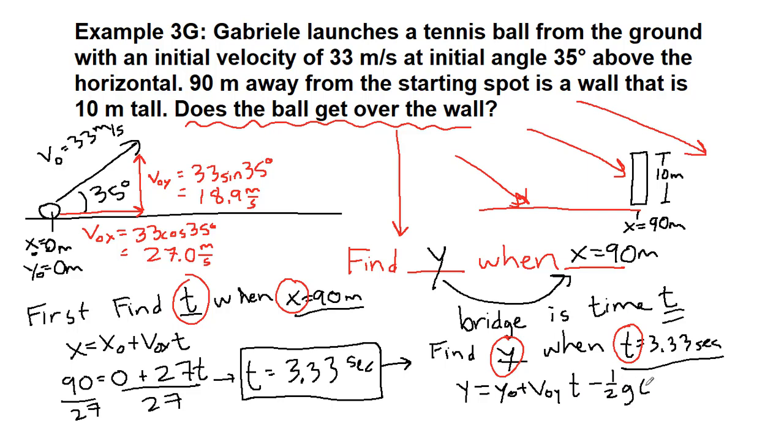And now we see that once we've found t, we have everything in this equation except for our unknown height.